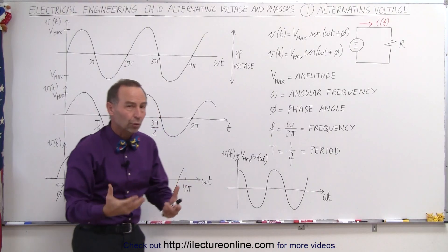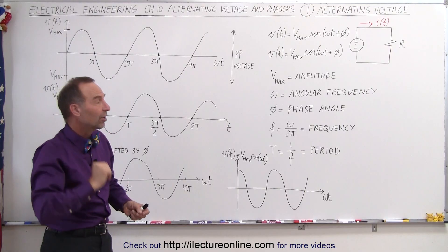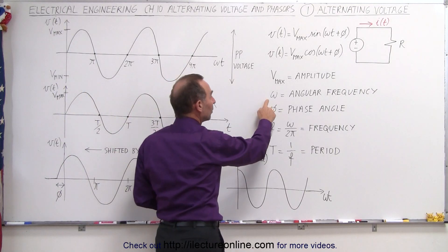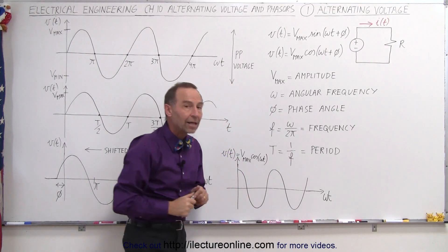So if we have a 60 hertz voltage or a 60 hertz current, that means it alternates 60 times per second. But then with omega, omega would be 2π times 60, and that's then called the angular frequency.